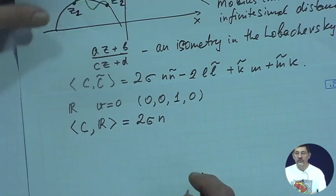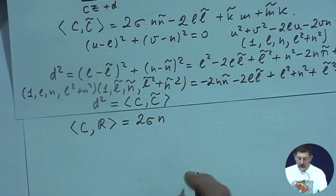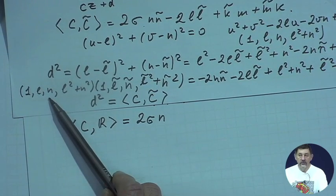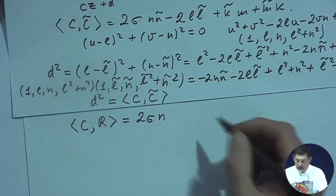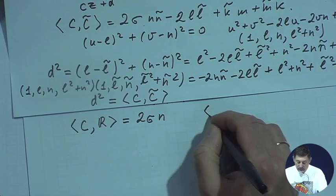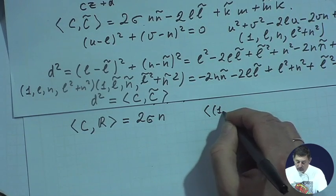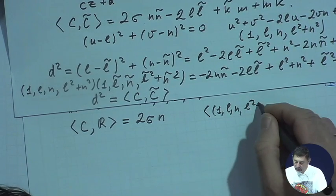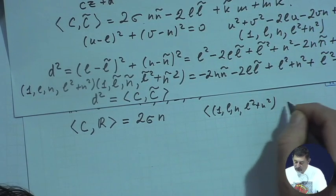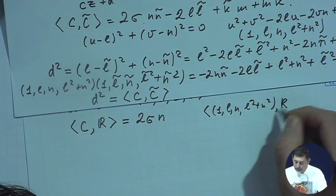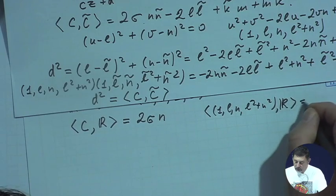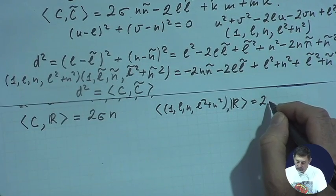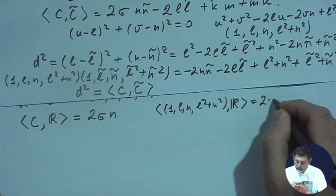In particular, if my cycle is a zero-radius cycle representing the point (l, n), then the inner product of cycle (1, l, n, l²+n²) with the real line will again be 2σn.